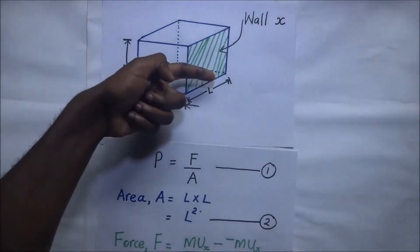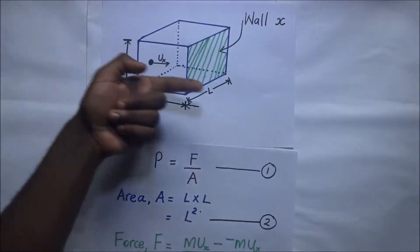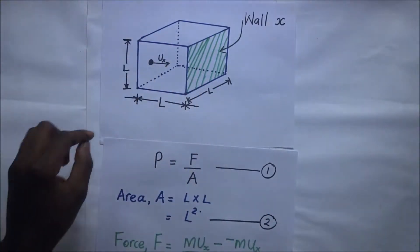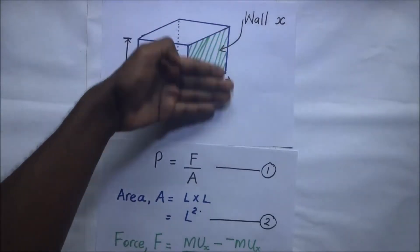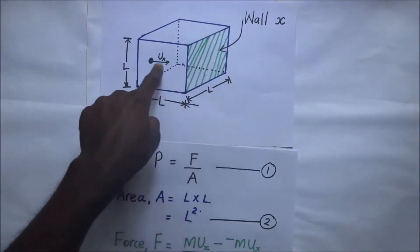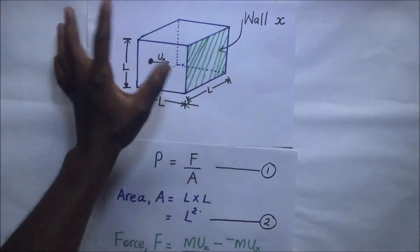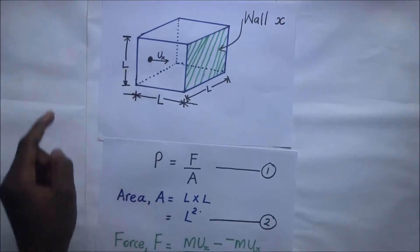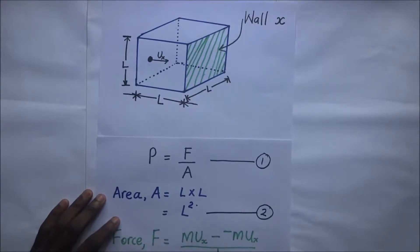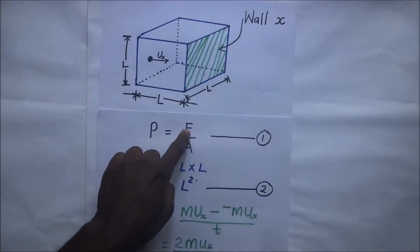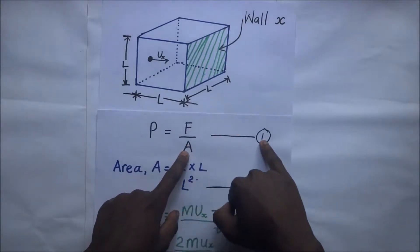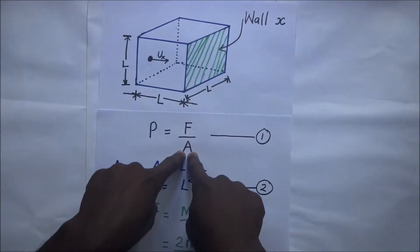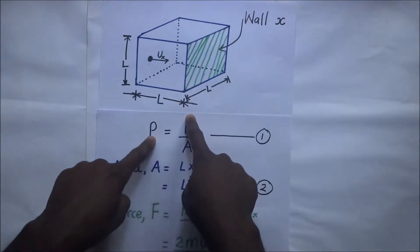As the particle comes and collides with wall X, there is going to be a change in momentum. As a result of that change of momentum, there is a force experienced on that wall due to that particle moving in the X direction. Since we are looking for an expression for kinetic pressure, we begin with pressure equals force over area as our primary equation.